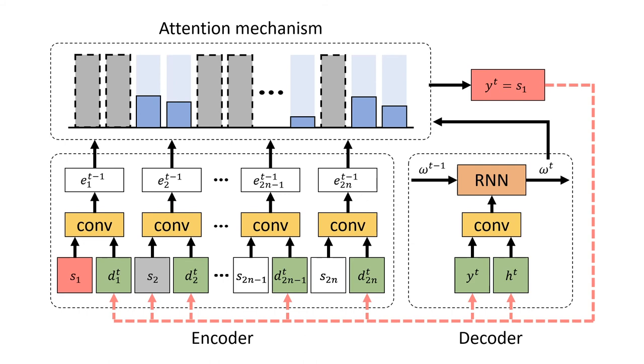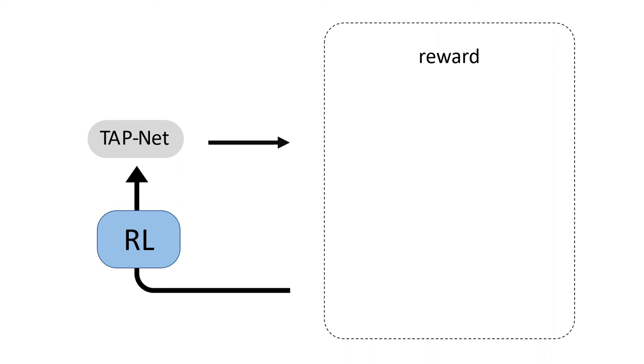We train our network using reinforcement learning, with the reward function consisting of three packing quality measures: compactness, pyramidality, and stability.